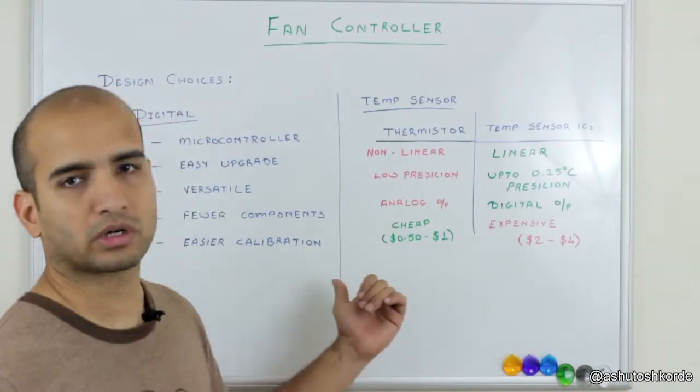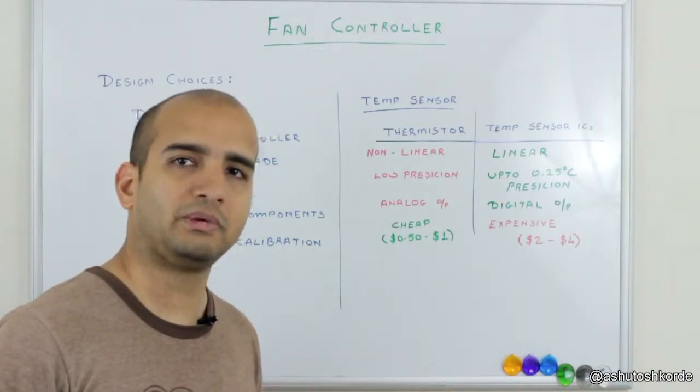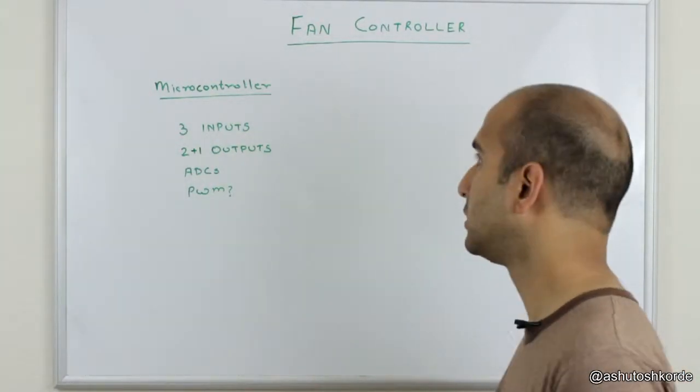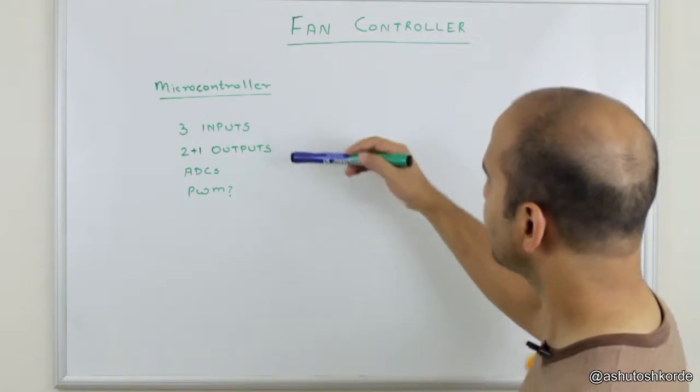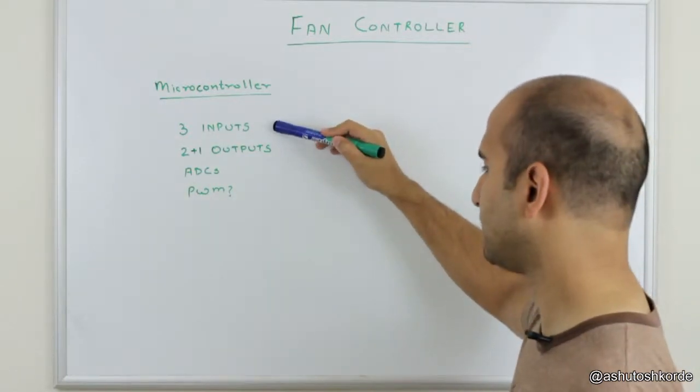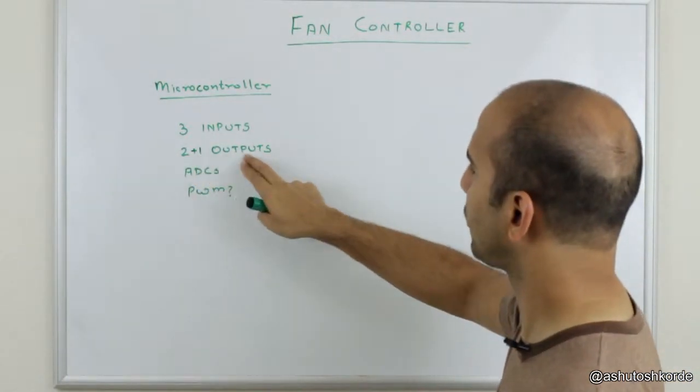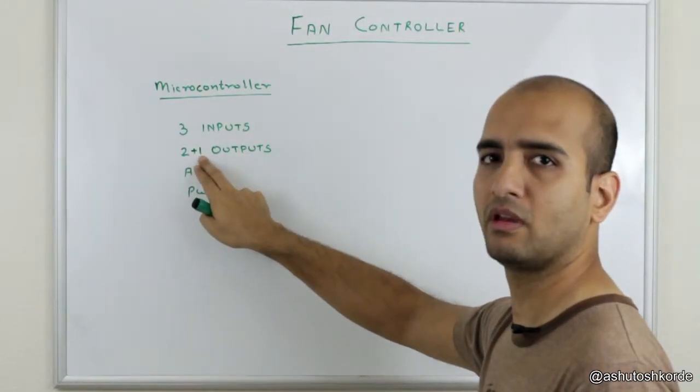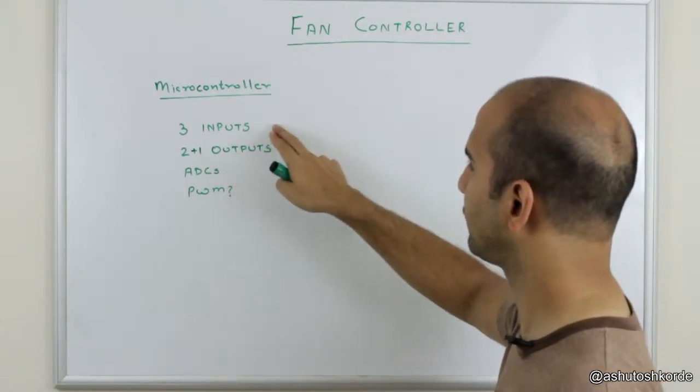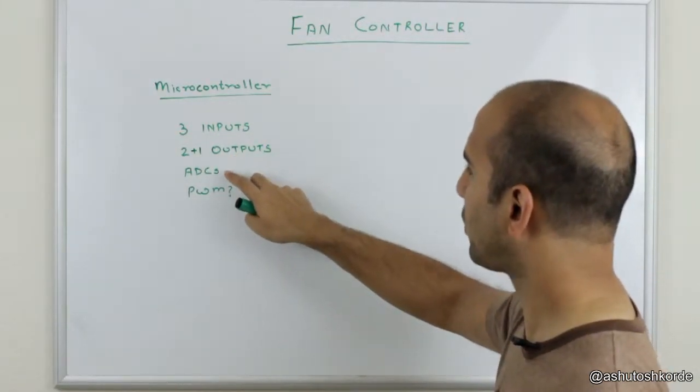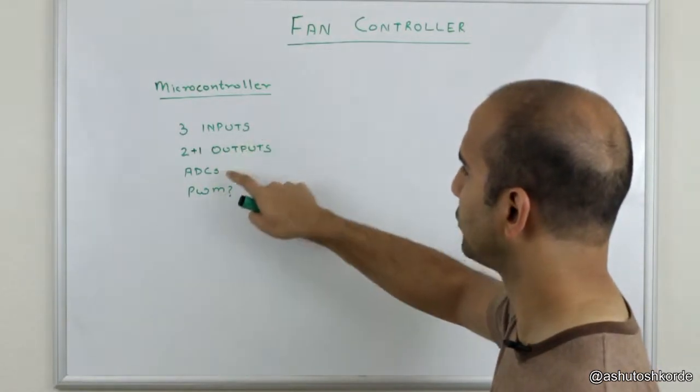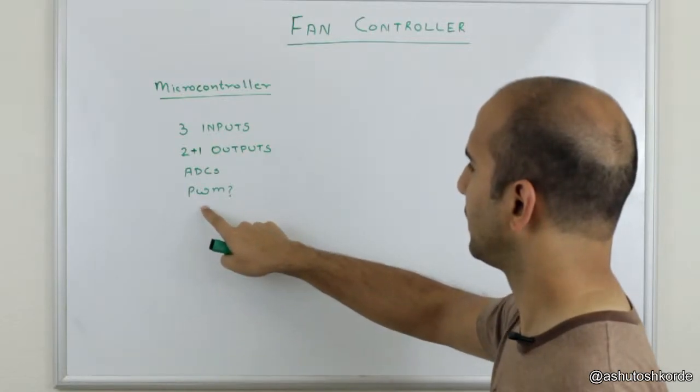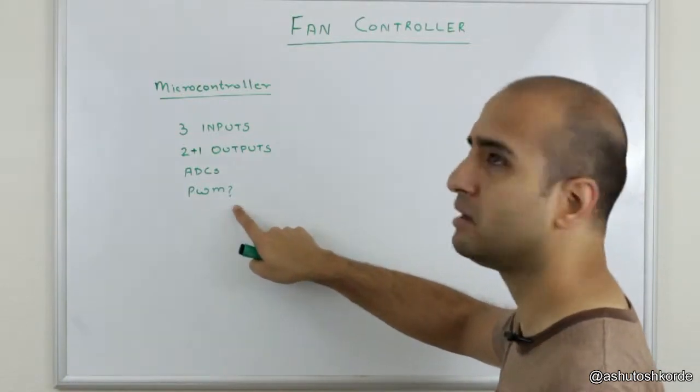And we'll go ahead and look at what microcontrollers we'll be able to use for this. Now let's look at what are options we have for the microcontroller. So we basically need three inputs, two plus one outputs, especially two for the fans and one for the buzzer if you want to include that. So we have three pins here, three pins here.